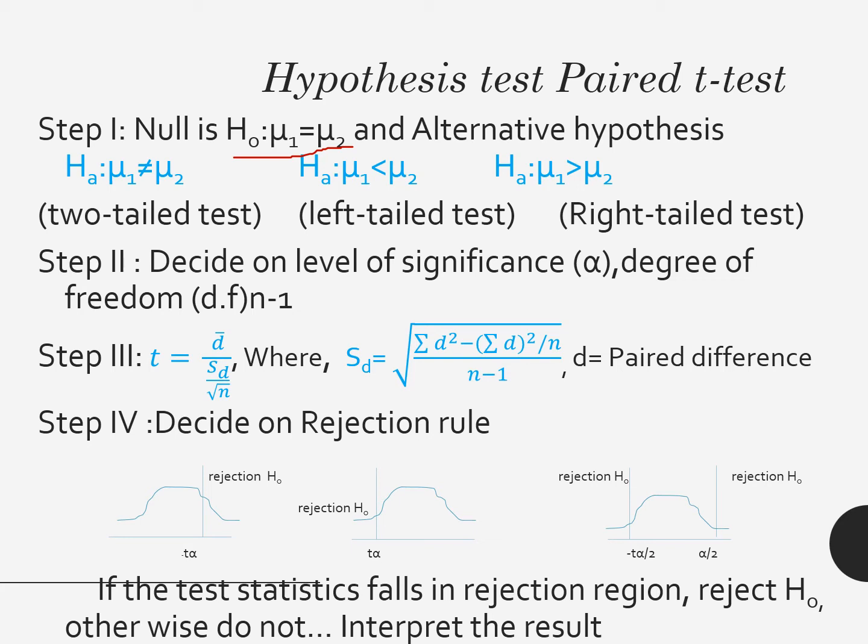Then we will decide on the rejection rule. The rejection rule will remain the same as I have told you in the previous lecture of t-test. Whatever test you are opting for—right tail test, left tail test, or two tail test—you will be using these procedures. Here you can see this mark, kindly observe it. If the test statistics falls in the rejection region, we reject H₀, otherwise we do not reject H₀, and then we interpret the result.